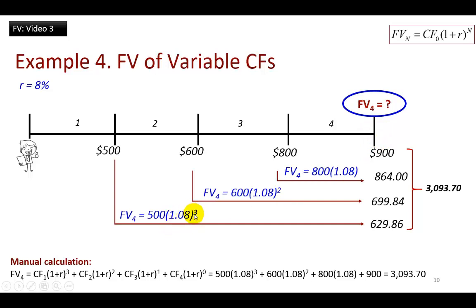That's why this is compounded over three periods, because from here to here, we have three periods. From here to here, two periods. And from here to here, one period. This last cash flow is not to be compounded at all, because it occurs at the point where value is being determined.